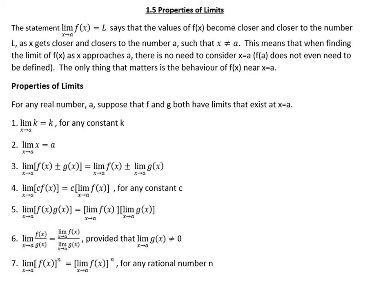We're going to take a look at properties of limits. The statement "the limit of f(x) as x approaches a equals L" says that the values of f(x) become closer and closer to the number L as x gets closer and closer to the number a, such that x does not equal a. This means that when finding the limit of f(x) as x approaches a, there's no need to consider the actual number at a. We need to consider the limit from the left and the right, but not actually at a.